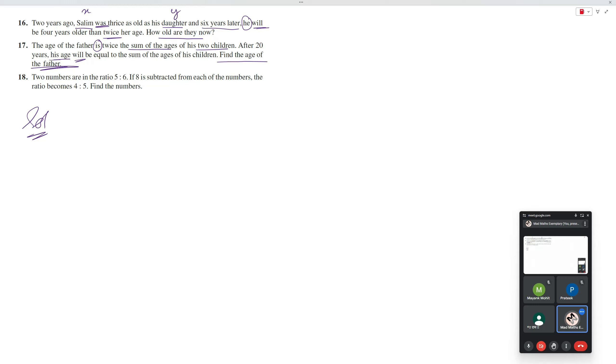Linear equation in two variables, uska pair, matlab 2 equations, 2 variables. So, numbers, aapke kya hai, x and y, inka ratio hai, 5 is to 6. So, x is to y is equal to 5 is to 6.